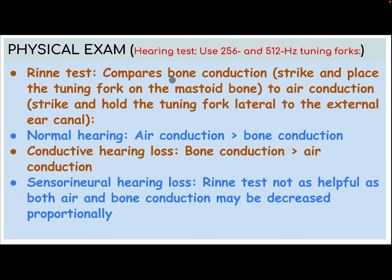Rinne test compares bone conduction — striking and placing the tuning fork on the mastoid bone — to air conduction — striking and holding the tuning fork lateral to the external ear canal. Normal hearing: air conduction greater than bone conduction. Conductive hearing loss: bone conduction greater than air conduction. Sensorineural hearing loss: Rinne test is not as helpful, as both air and bone conduction may be decreased proportionally.